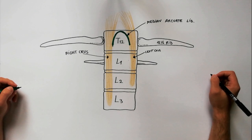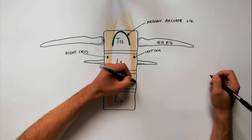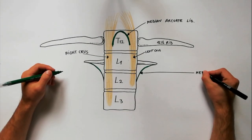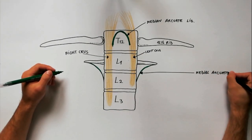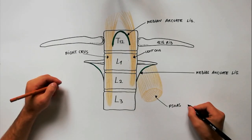The medial archoid ligament extends from the side of the body of L2 vertebra to the tip of the transverse process of L1 vertebra. This ligament arches over the psoas major muscle.